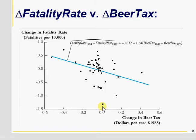As we have seen in our previous video, when we apply fatality rate and regress fatality rate on beer tax for 1982 or for 1988 separately, we get a positive slope. It means that our sign is not as per theory, but when we have taken the difference, our sign is as per economic theory.